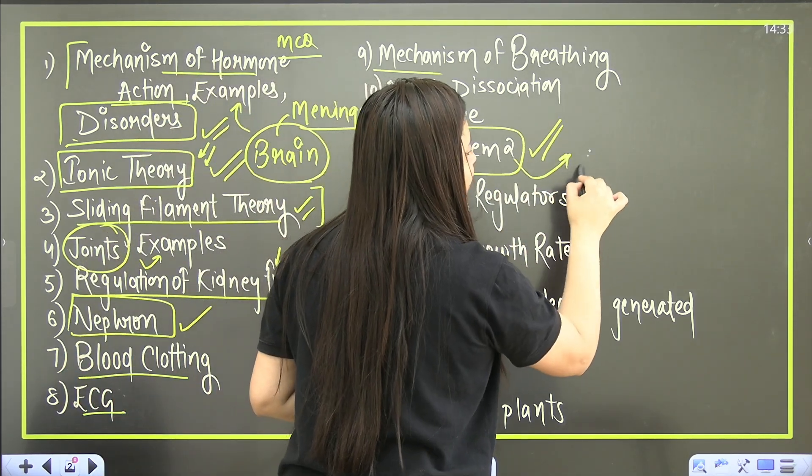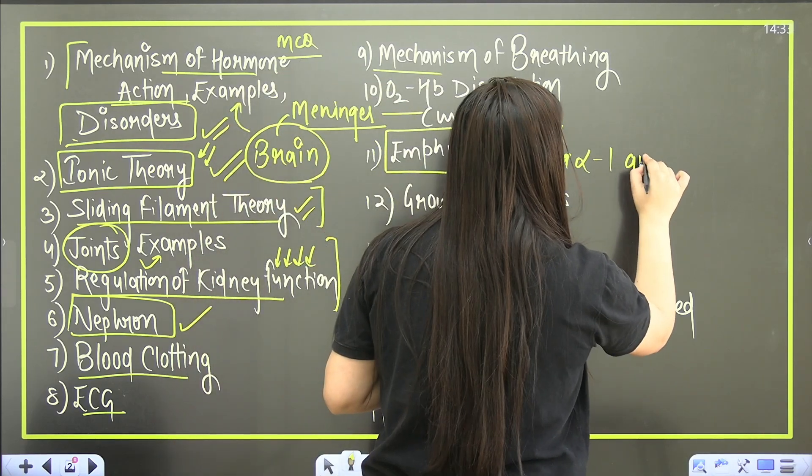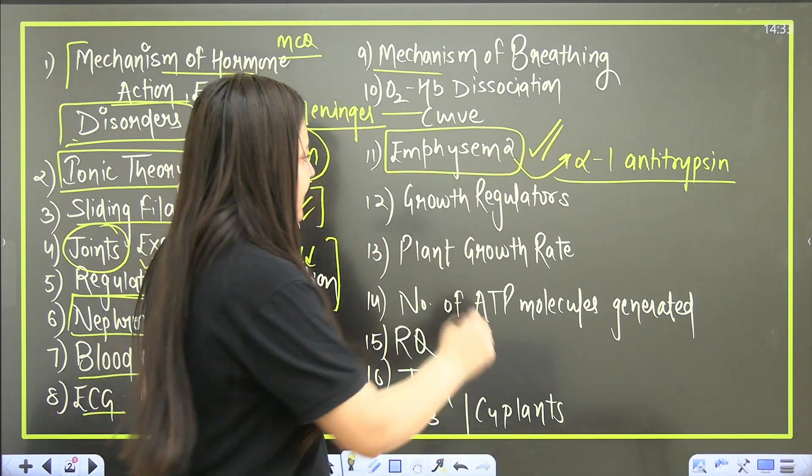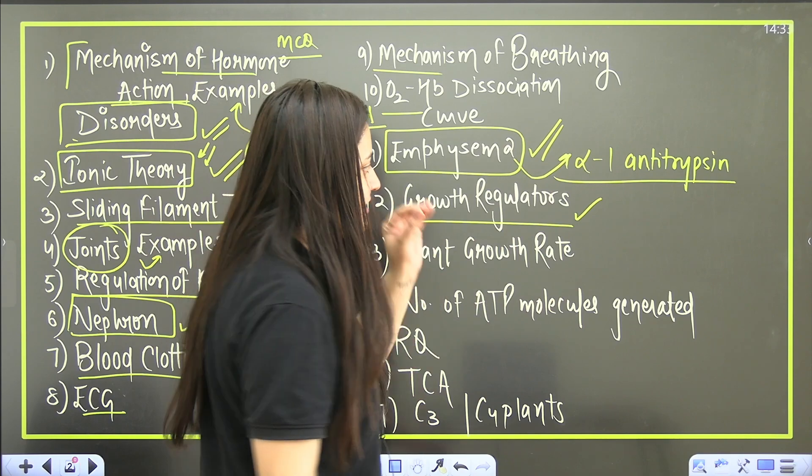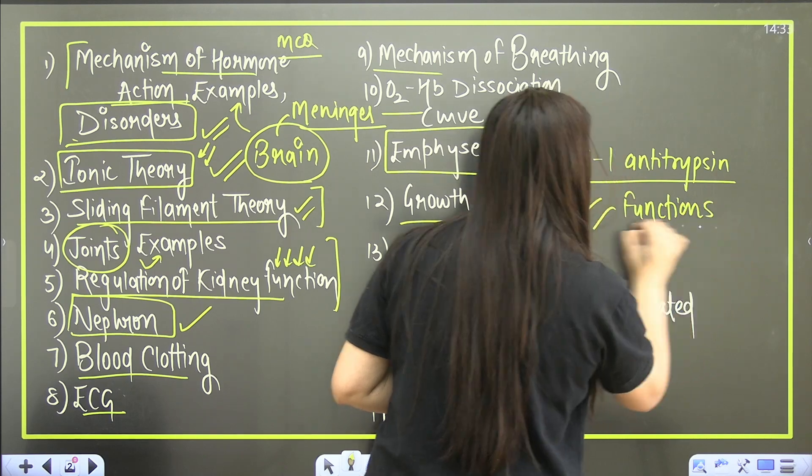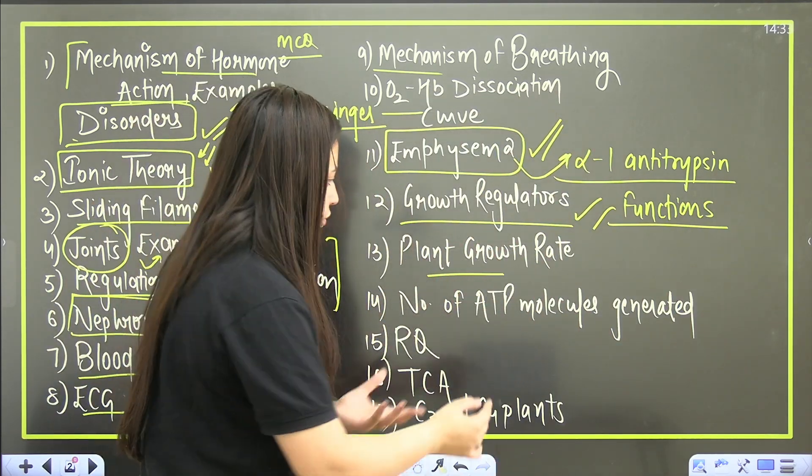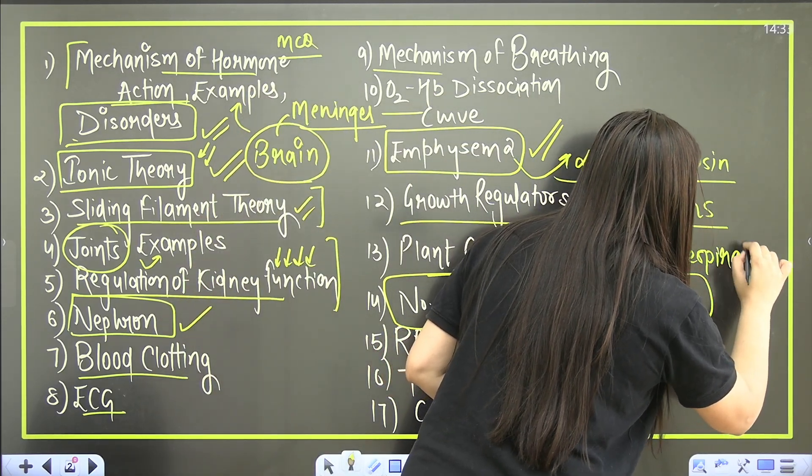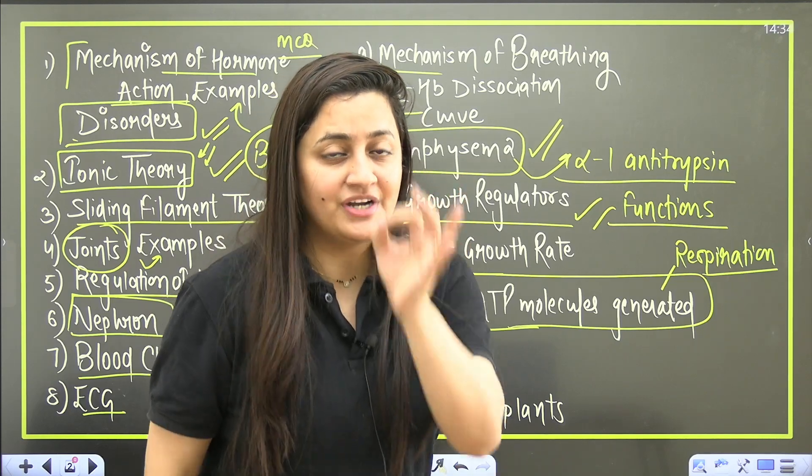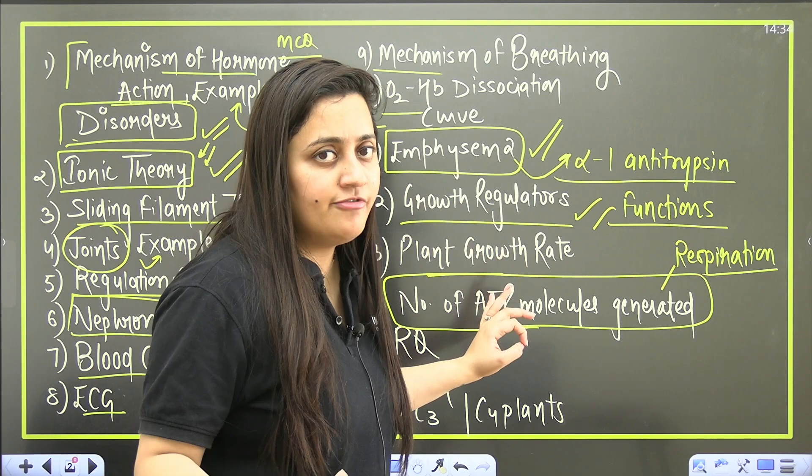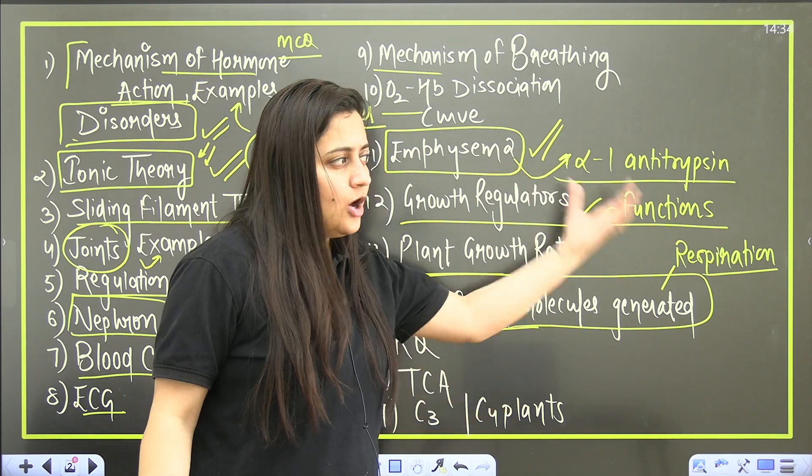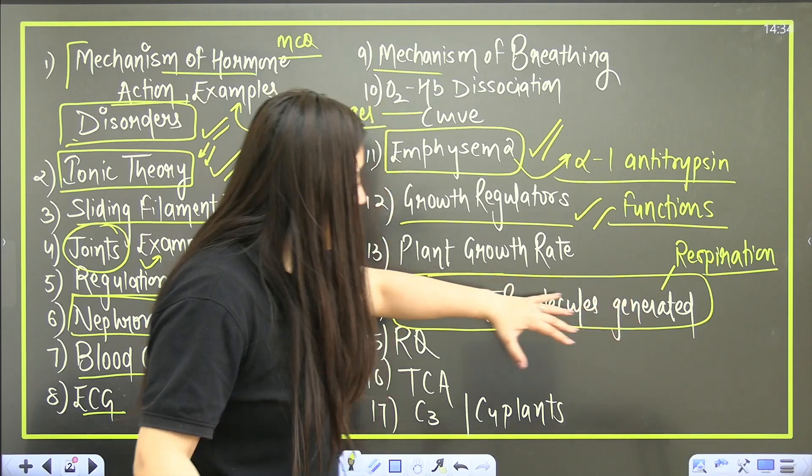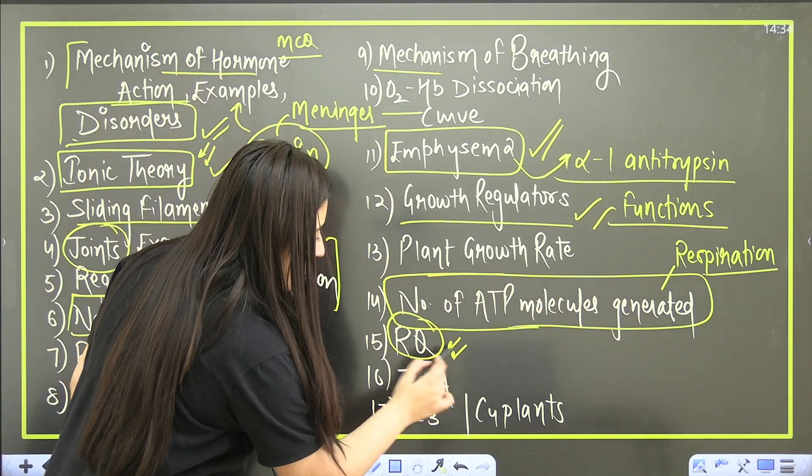Growth regulators - in plant growth regulators the most important thing is you should know the function of the hormones. Here specifically you need to pay attention on the functions. Growth rates - arithmetic, geometric. Then the number of ATP molecules generated in that energy conversion - this is from the respiration chapter. Now from plant physiology two chapters are deleted, so please make sure that you don't miss plant physiology. This time more number of questions will be there from these three chapters. That ATP molecules - how many you are getting from glycolysis, from Krebs cycle, in aerobic breakdown, in anaerobic breakdown.